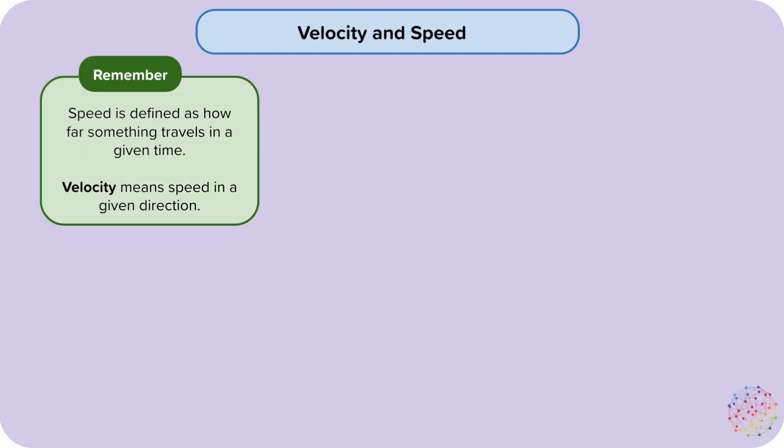So, if the Earth's velocity is constantly changing, does this mean the Earth's speed is changing too? First of all, let's recap what speed and velocity mean. Remember, speed is defined as how far something travels in a given time. Velocity means speed in a given direction.